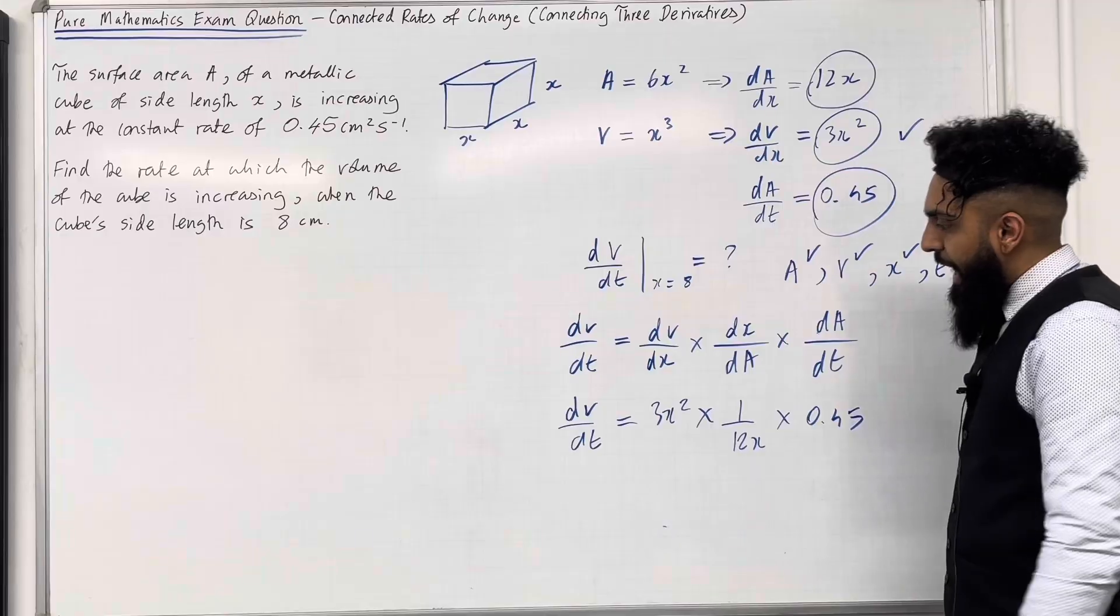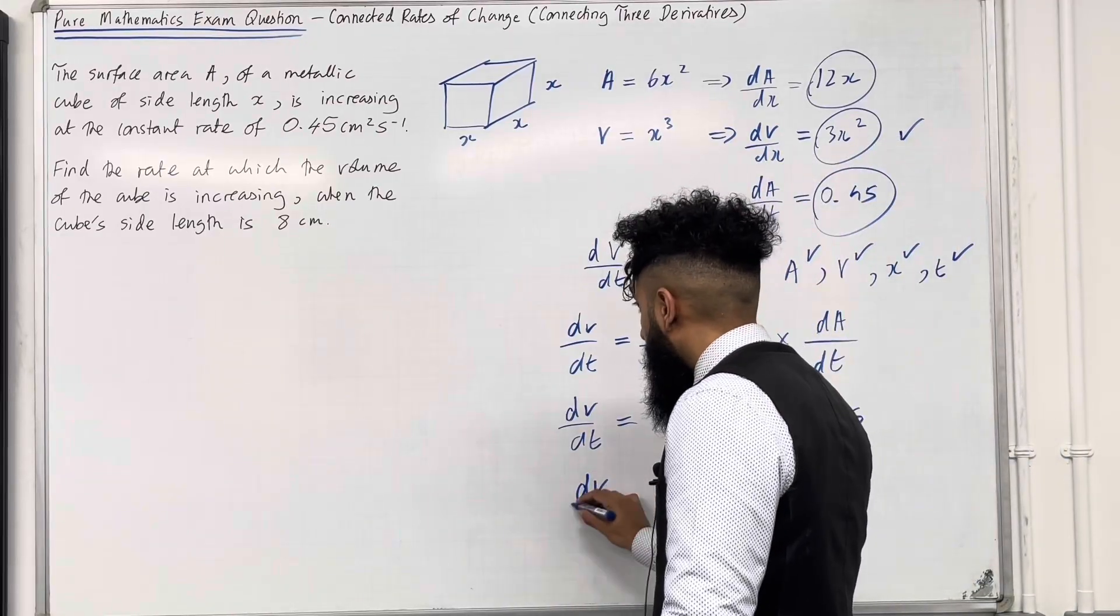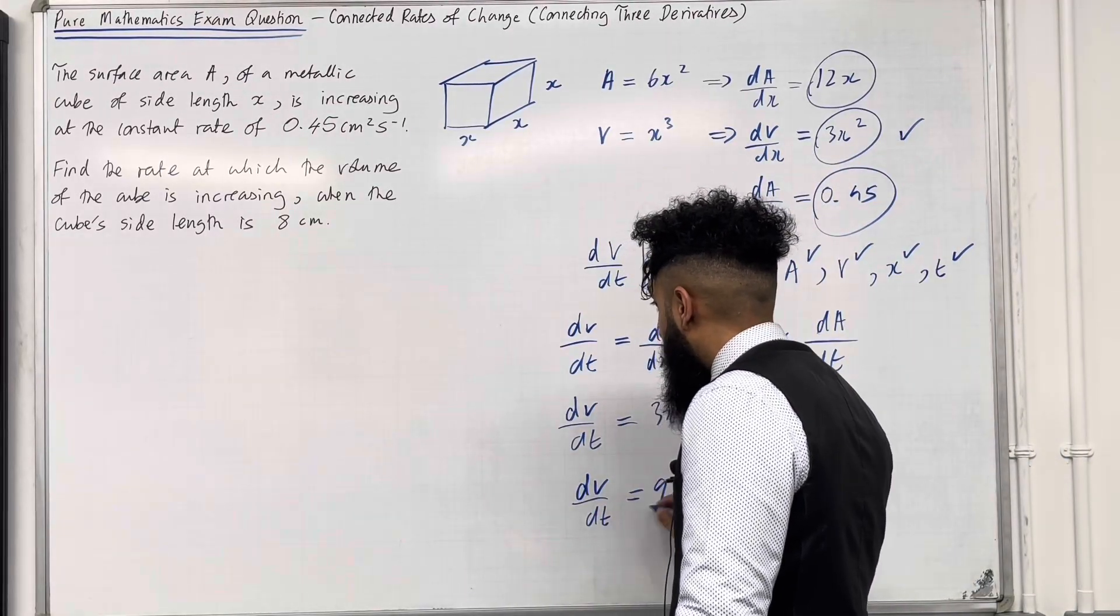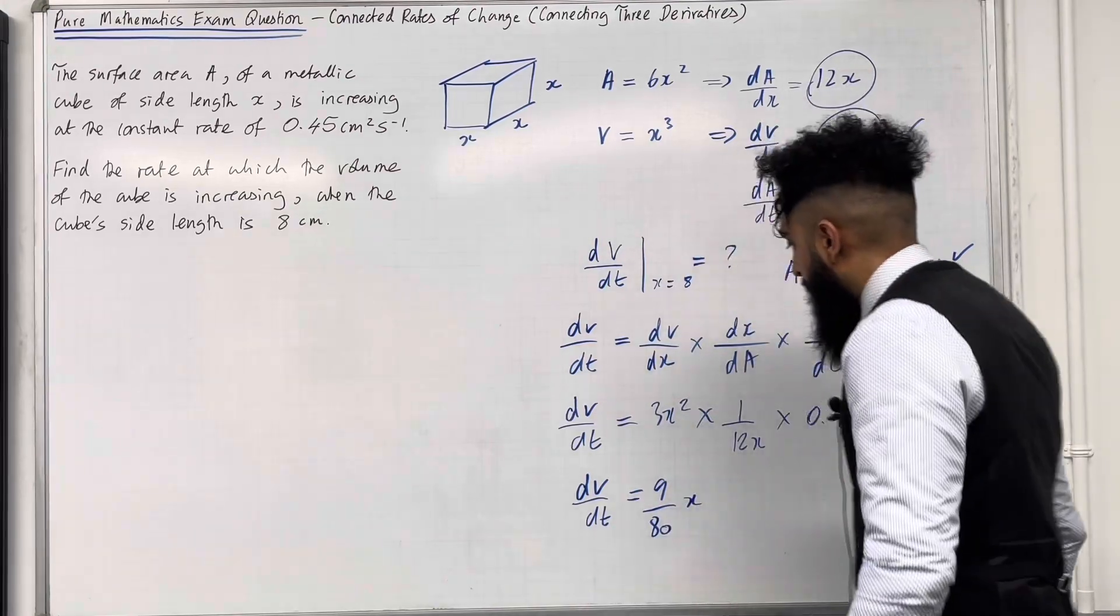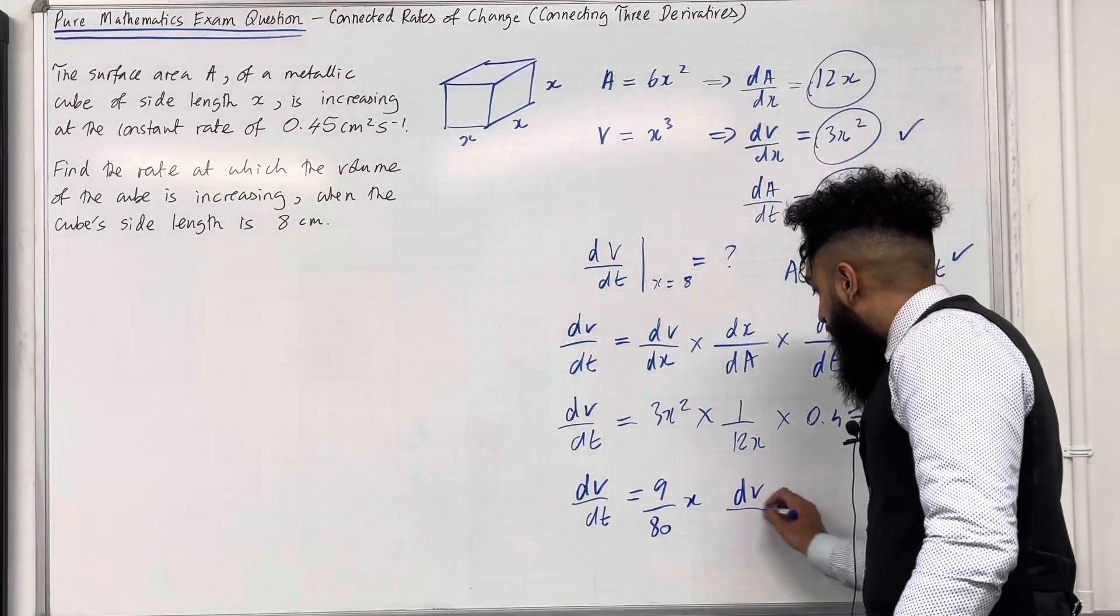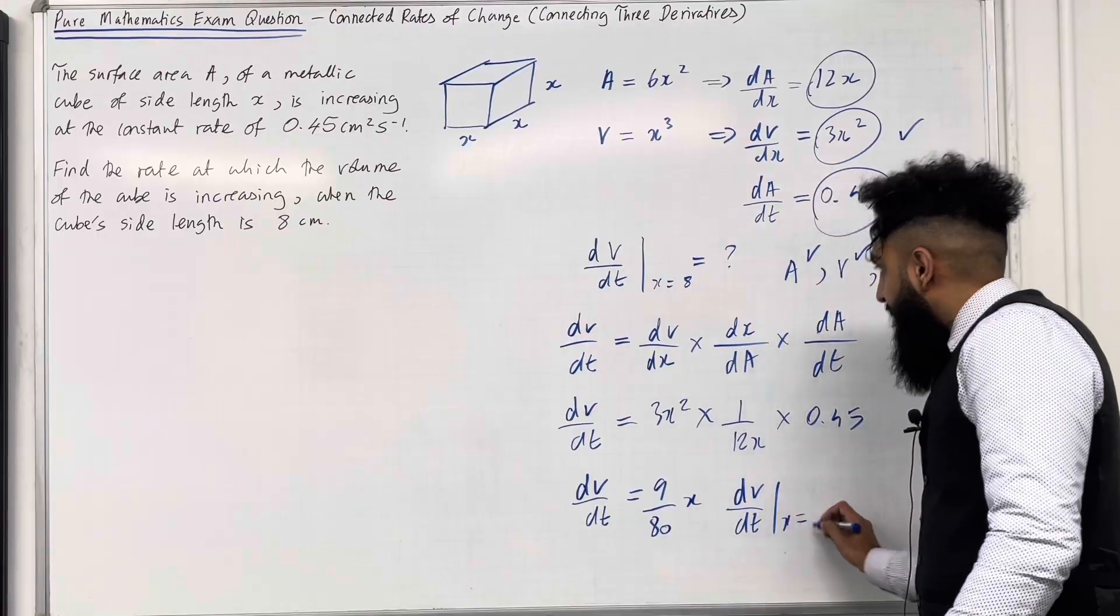Right, so if I multiplied these three elements, my dV over dt will equal 9 over 80X. So now I can work out dV over dt when X equals 8.